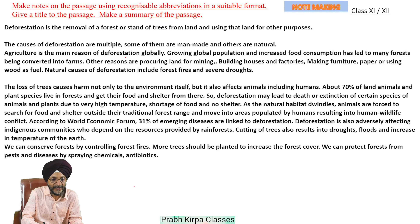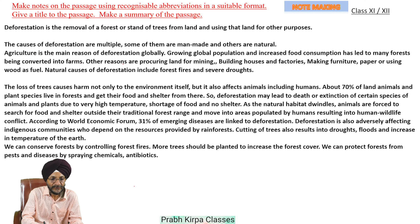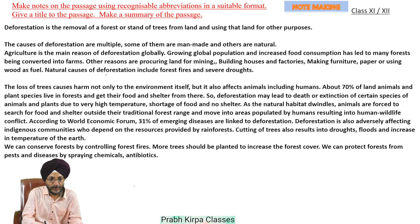Agriculture is the main reason for deforestation globally. Growing global population and increased food consumption has led to many forests being converted into farms. Other reasons are procuring land for mining, building houses, factories, making furniture, paper, or using wood as fuel. Natural causes of deforestation include forest fires and severe droughts.